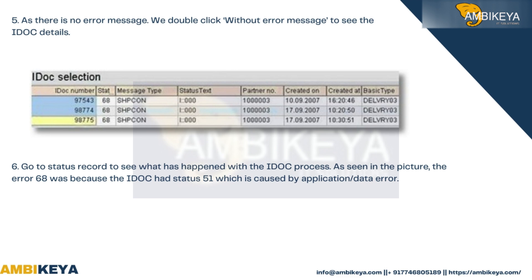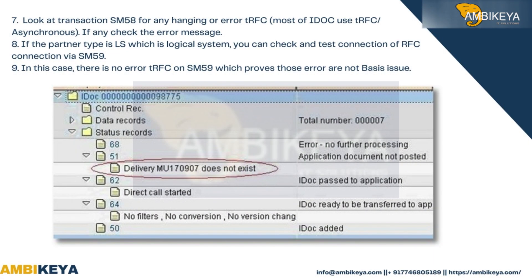Since there is no error message, double-click without error message to see the IDoc details. Go to the status record to see what happened — error 68 was caused by the IDoc having status 51, which is an application or data error. Check transaction SM58 for any hanging or error tRFC, as most IDocs use tRFC or asynchronous processing. If the partner type is LS (Logical System), check and test the RFC connection via SM59. In this case, no error tRFC on SM59 confirms these errors are not a basis issue.